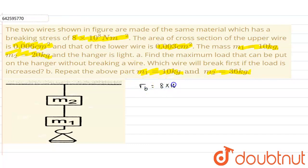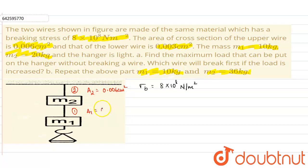We are given the breaking stress of the wire as 8 × 10⁸ N/m². Let us call the upper wire the second wire and the lower wire the first wire. The area of cross-section for the second wire is 0.006 cm² and for the lower wire it is 0.003 cm². The mass m1 = 10 kg and m2 = 20 kg. We need to calculate the maximum weight that can be put on the hanger so that no wire breaks. Let the mass placed on the hanger be m.